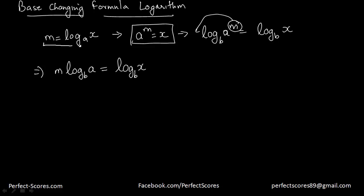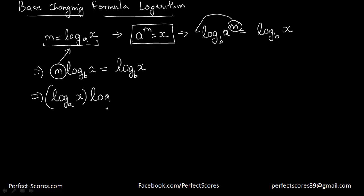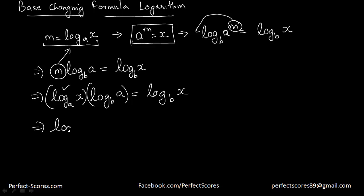We also know that m is equal to log of x to the base a. So if I substitute m, I'm going to get: log of x to the base a times log of a to the base b is equal to log of x to the base b. Rearranging, log of x to the base a is equal to log of x to the base b divided by log of a to the base b.